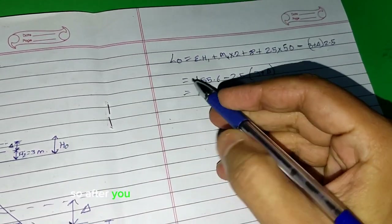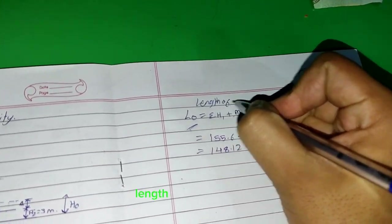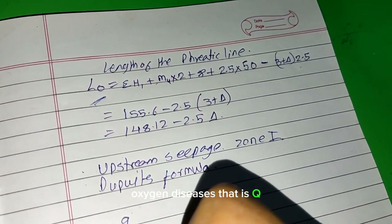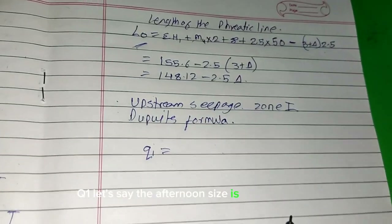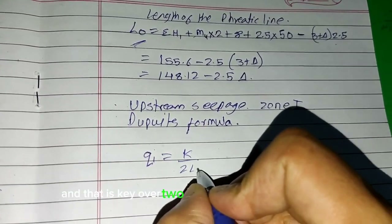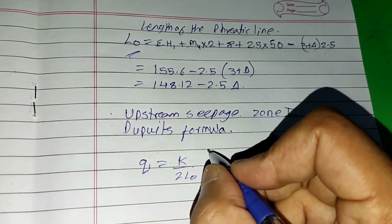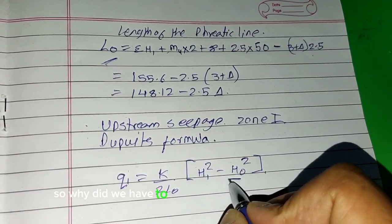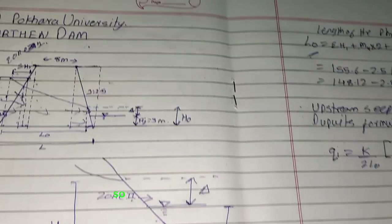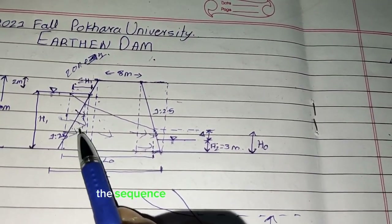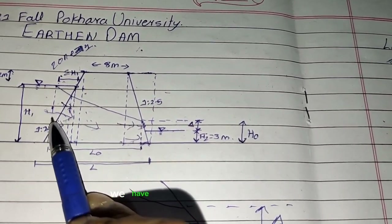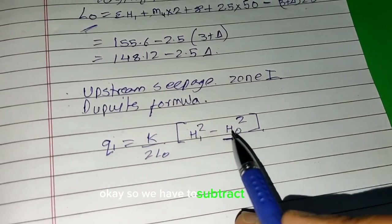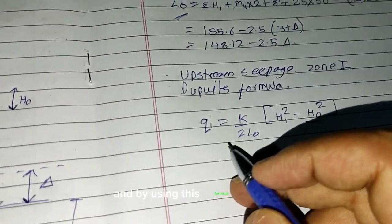After calculating the length of the phreatic line L₀, we use the formula for upstream seepage discharge q₁. That is: q₁ = (k / 2L₀) × (h₁² − s₀²). We subtract s₀² because the seepage entering from the bottom portion cannot be added — we calculate only the seepage entering through the relevant portions and subtract the seepage from the s₀ height.